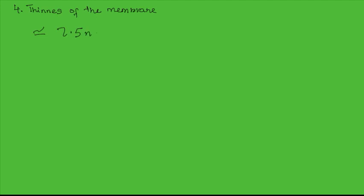Another property of the cell membrane is its thinness. Even though the membrane has three layers, it is very, very thin — approximately 7.5 nanometers in most cells, which is about 7.5 × 10⁻⁹ meters. The thinness promotes rapid movement of substances into and out of the cell. Although the primary function of the cell membrane is to contain the material within the cell, it also controls what moves in and out, and it is important that it is thin enough to allow for rapid movement of substances.